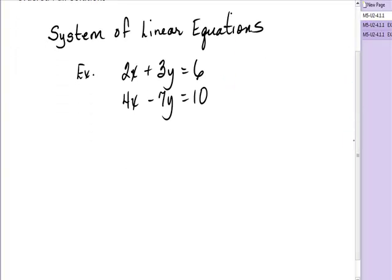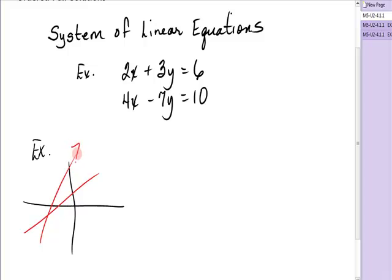Let me show you the three different scenarios that could happen. We could have one line coming in like this, and maybe another one looking like this. Every point on this line is a solution to the equation defining it, and every point on this line is a solution to the equation defining it. But this point right here is a common solution — it is a solution to both of them, and that's what we're going to be finding in this unit.